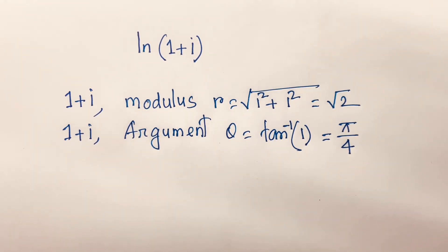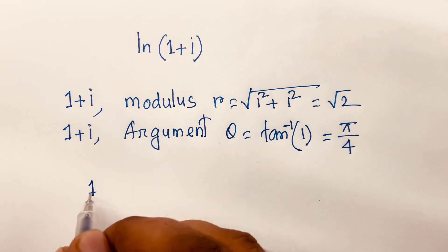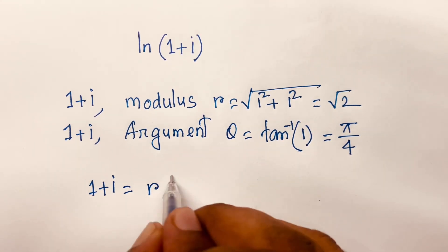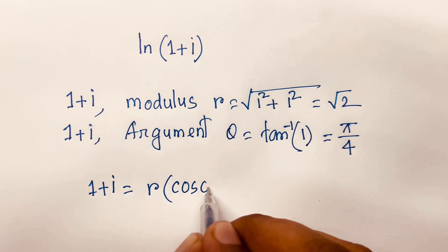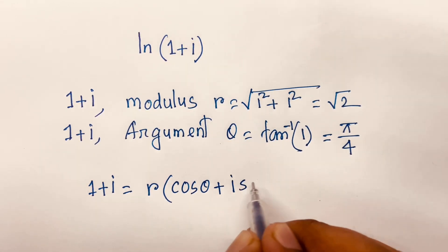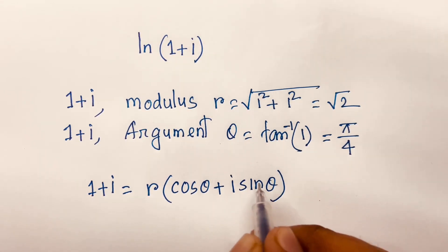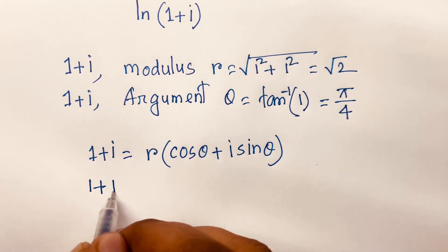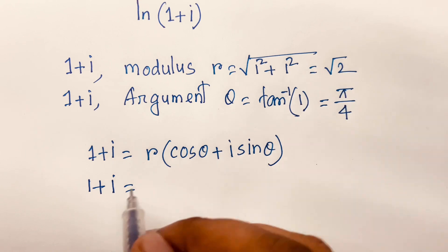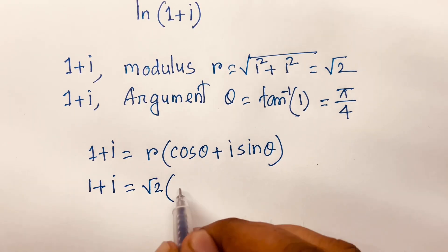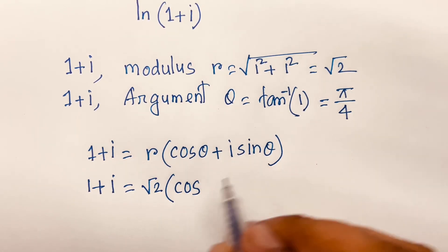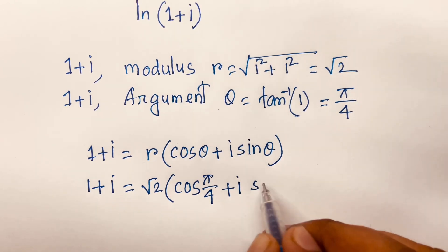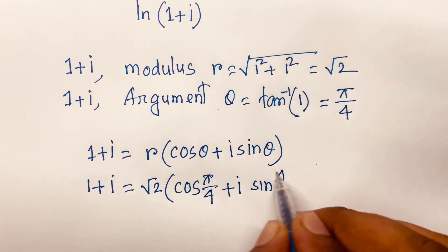Then according to Euler's rules, I can say 1+i is equal to r(cos θ + i sin θ). So here 1+i = √2 · (cos(π/4) + i sin(π/4)).